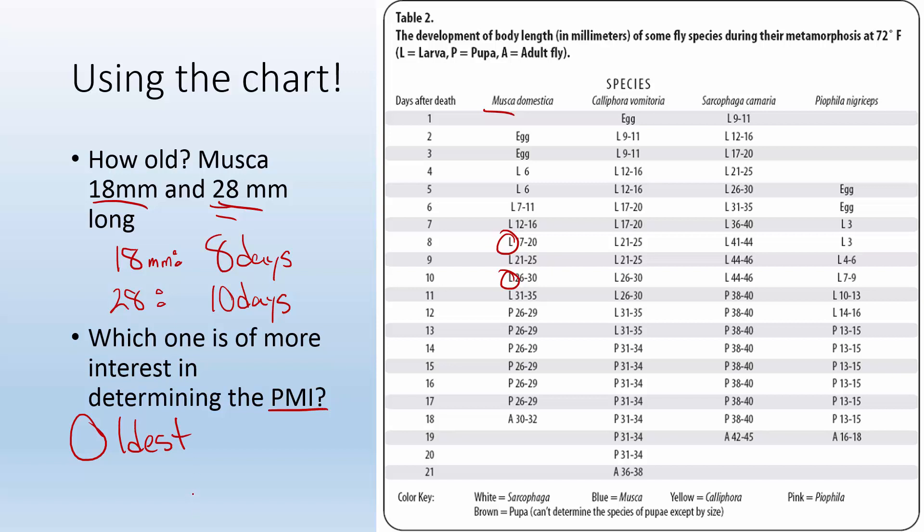So which one's going to be the oldest? Usually we go based on size. It takes time to grow. The bigger they are, the oldest they are, so it's going to be the 28 millimeter one is going to be the most of interest. So 10 days. Which would you go with? 8 days or 10 days? You go with 10 days.